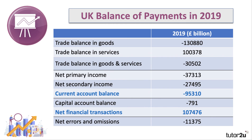Overall, we had a current account deficit in excess of £95 billion. But the UK had net financial transactions of plus £107 billion. So in 2019, although we ran a deficit of over 4% of our GDP, we were able as a country to attract net financial transactions coming in to more than offset that. The three components at the bottom add up to the current account and should sum to zero.